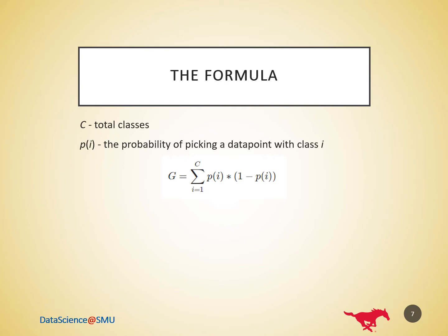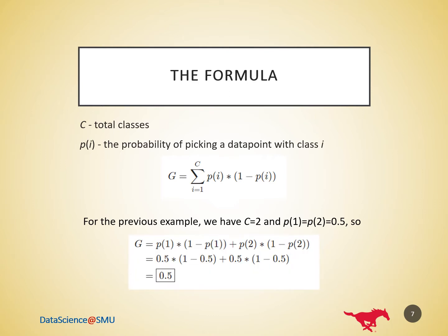If we have C total classes and P(i) is the probability of picking a data point with class i, then the Gini impurity is calculated as the sum of products P(i) multiplied by 1 minus P(i). For the previous example, we had C equals 2 and probabilities for both classes of green and blue points equals 0.5, so Gini impurity equals 0.5, which matches what we calculated before.